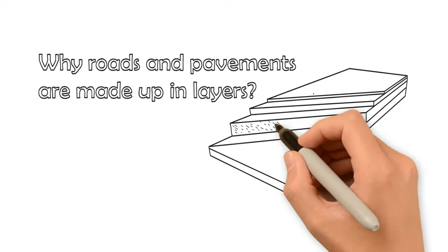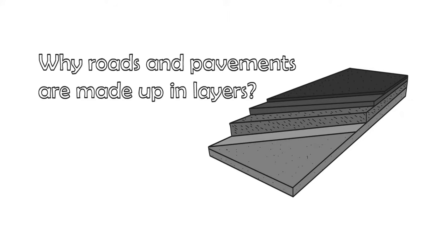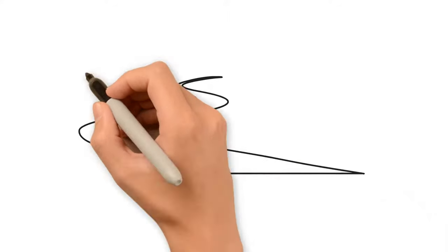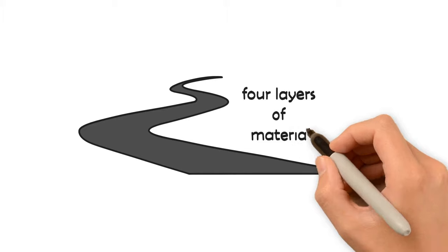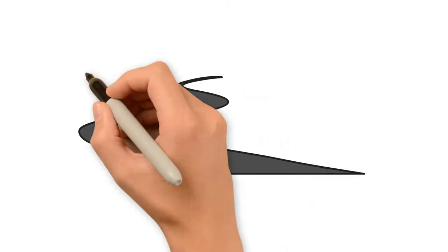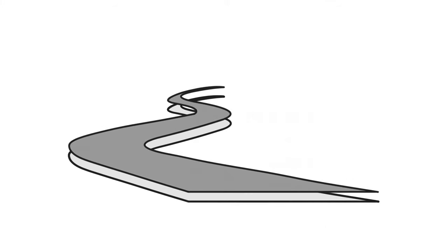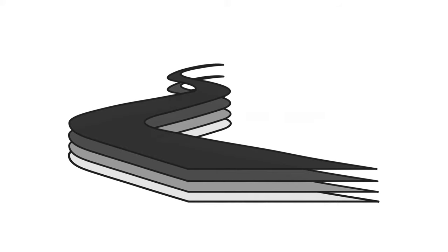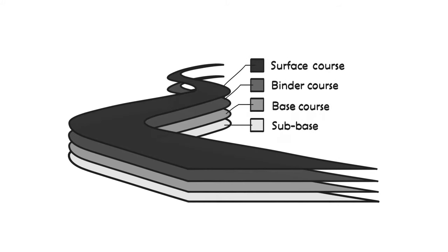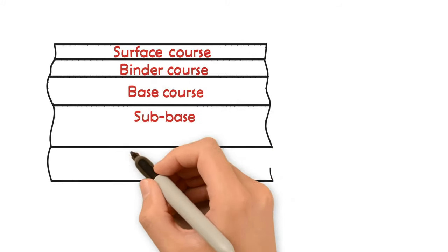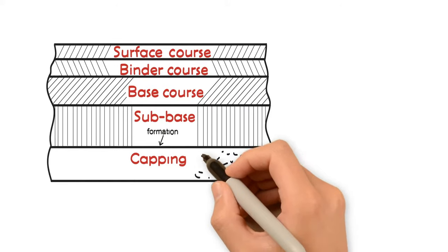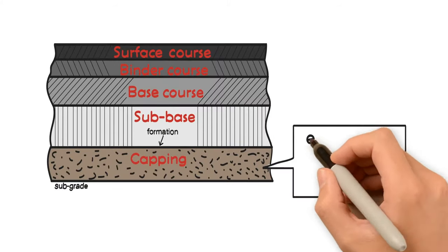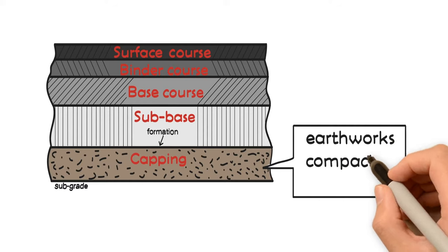Asphalt pavement is normally made up of four layers of material: sub base, base course, binder course, and surface course. These layers are laid onto a formation, which is the surface of a capping layer where the ground is in its final shape after the completion of earthworks compaction or stabilization.